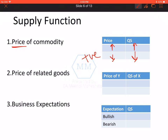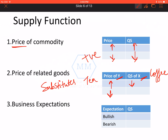Second factor affecting supply — price of related goods. Ek good ki price mein agar change aata hai, tho doosare good ki supply mein farak pad jata hai. Woh kehlata hai related goods. Mainly relation between price and quantity supplied of substitutes. Substitutes woh goods hote hain jo ek doosare ke badle mein use kiye ja sakte hain, say for example tea and coffee. Agar tea ke prices badh jayenge, tho tea mein zyada profitability dikh rahi hai, that is why coffee ka quantity supplied kam ho jayega. Aur agar tea ke prices kam ho jate hai, tho coffee mein zyada profit dikh raha hai, isliye quantity supplied of coffee is going to increase. In donon ke beech mein negative relation hai.